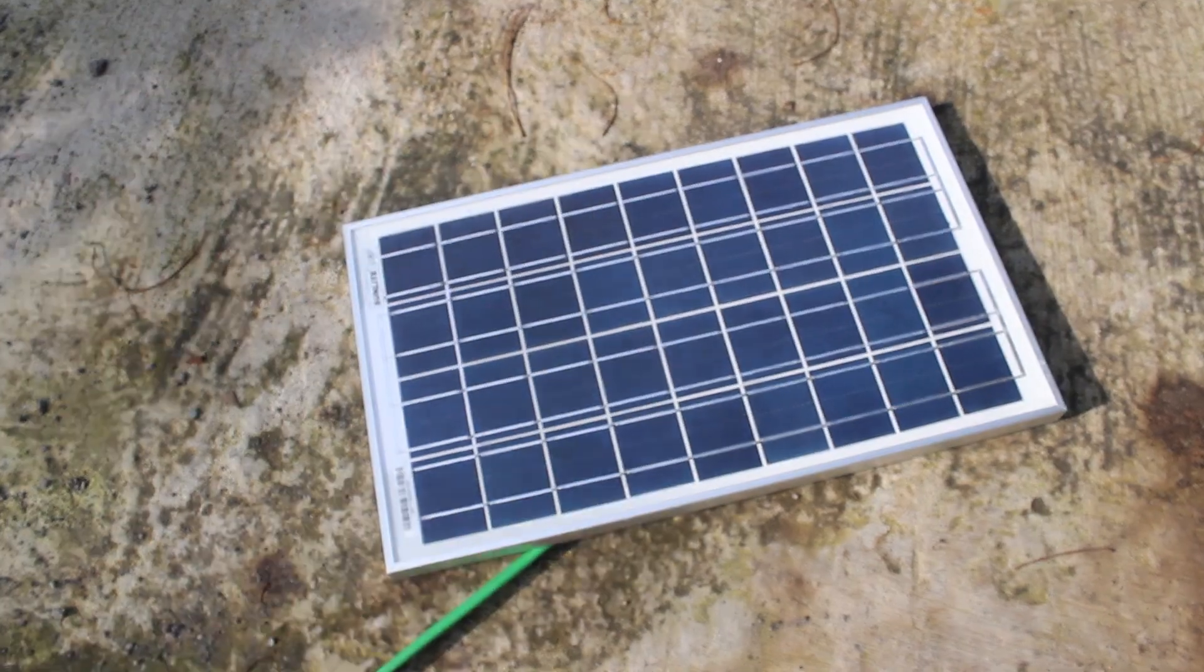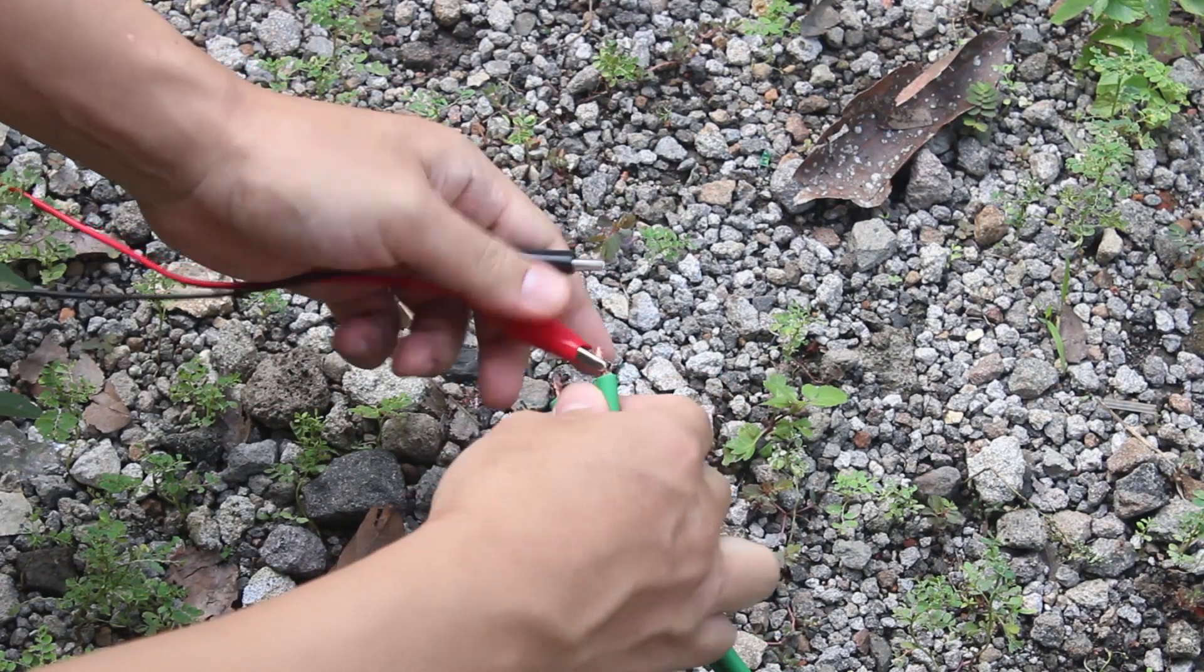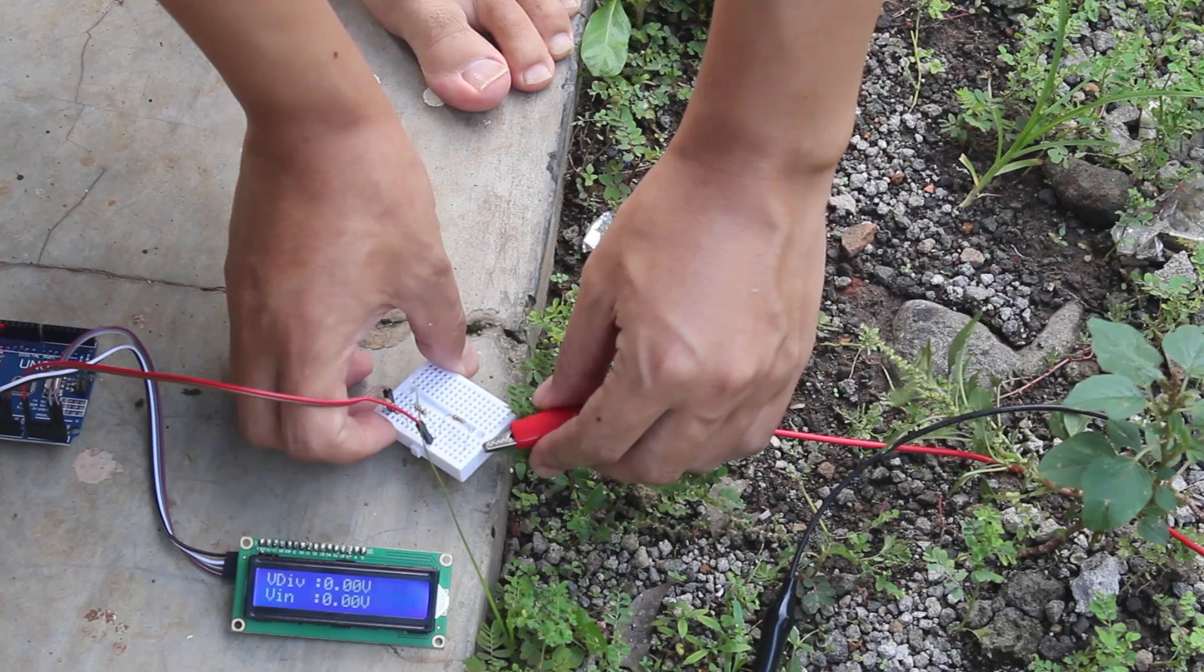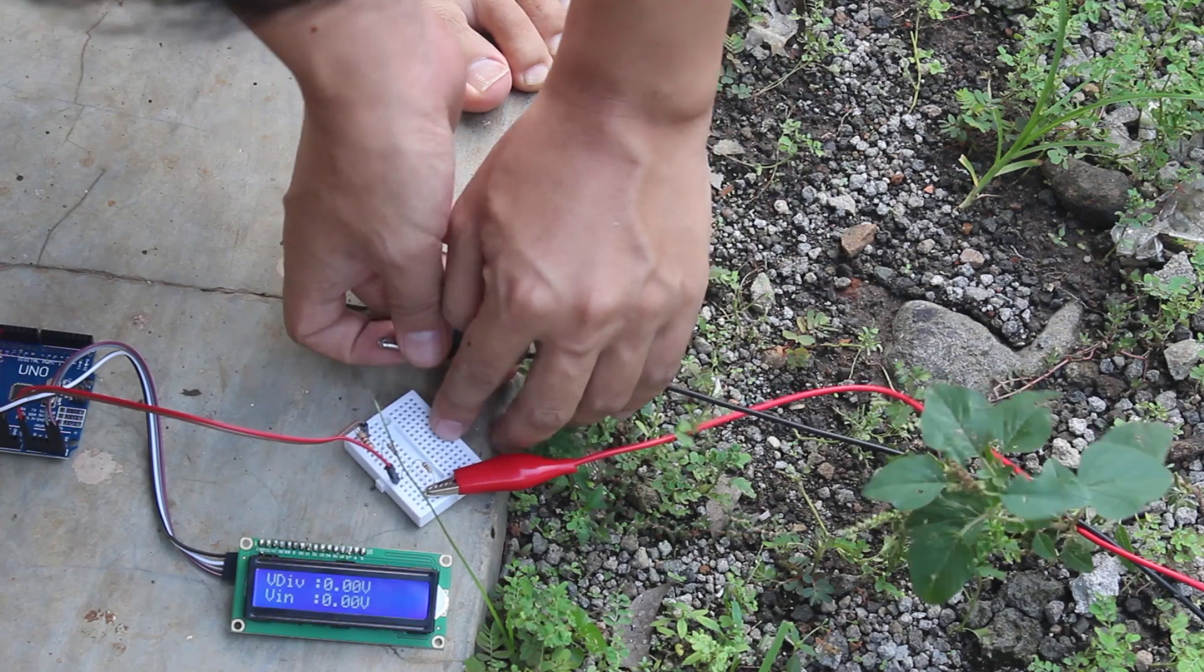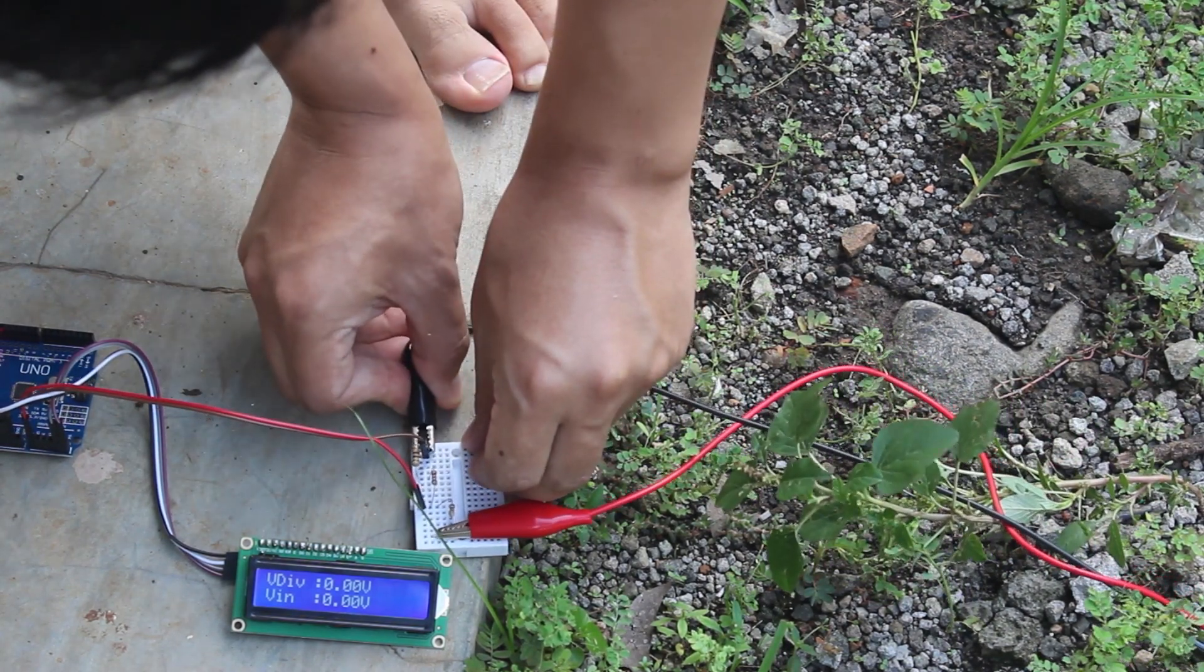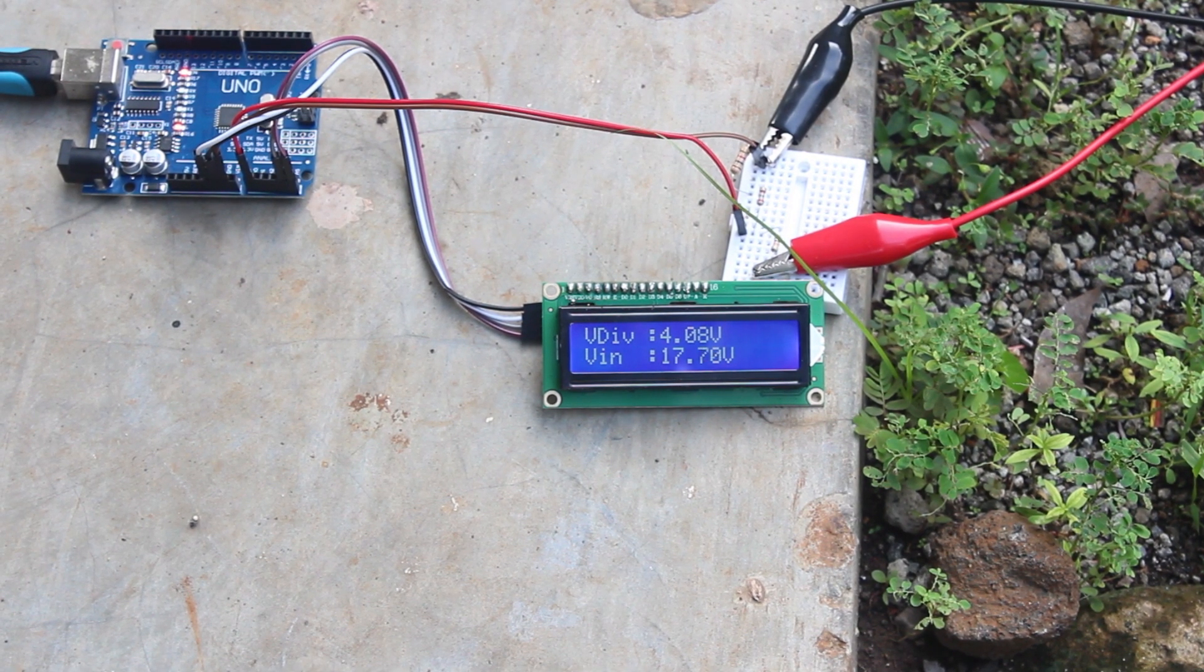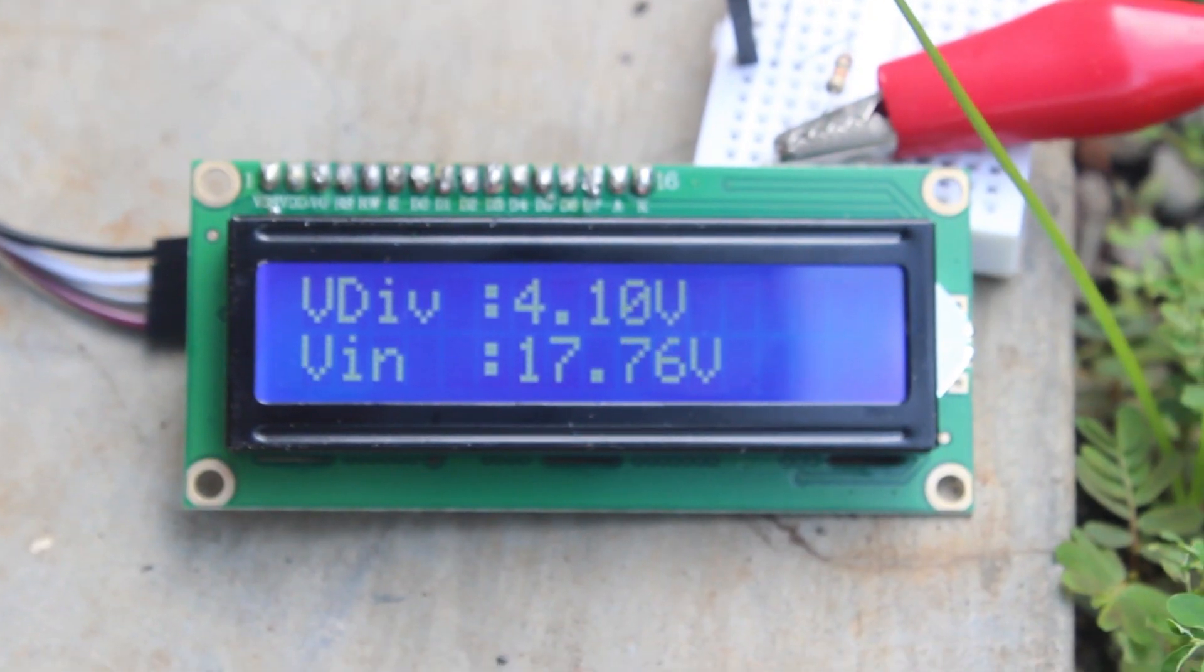Let me use a real solar panel. I placed the solar panel outside and hook it up to my circuit. And as you can see on the LCD the voltage is read as expected.